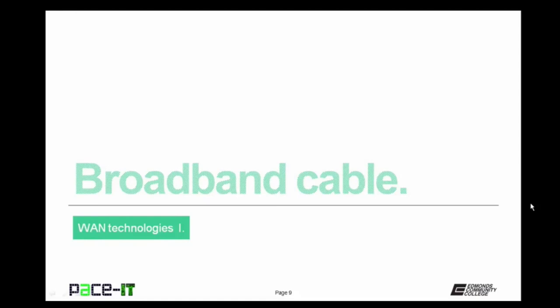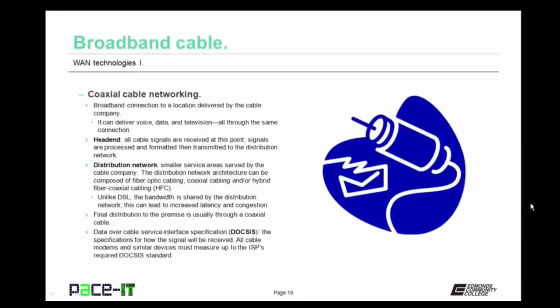Now that the PSTN is out of the way, let's move on to broadband cable. Broadband cable is coaxial cable networking — a broadband connection to a location delivered by the cable company. Broadband cable can deliver voice, data, and television all through the same connection. The digital signal is delivered to the head end, where all cable signals are received, then processed, formatted, and transmitted to the distribution network — a smaller service area served by the cable company.